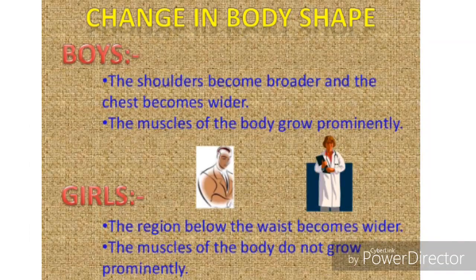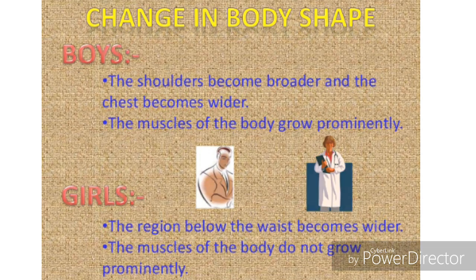Now let us see the changes that take place in body shape. In case of boys, the shoulders become broader and the chest becomes wider, and the muscles of the body grow prominently. In case of girls, the region below the waist becomes wider, and the muscles of the body do not grow as prominently.